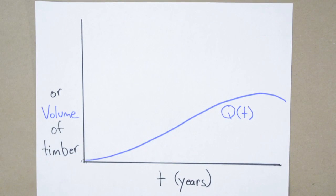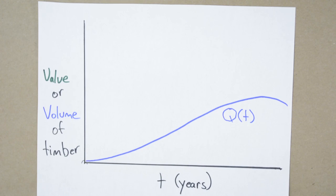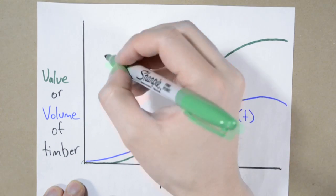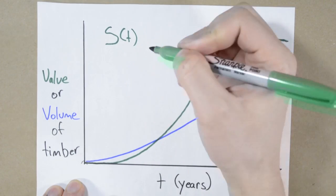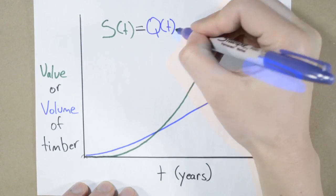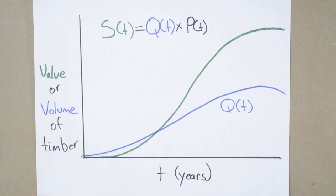Anyways, we want to be working with the value of the timber, the value of the stumpage. It's going to be steeper because the value increases as the diameter of the tree gets wider, so it should look something like this. This will be S, the stumpage, and it's going to depend on the year, t. The stumpage should simply be the quantity of wood at that year multiplied by the price of wood. We're assuming the price of wood is only going to be based on the diameter of the logs, and isn't affected by supply and demand or anything else for now.